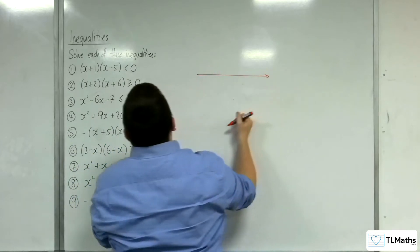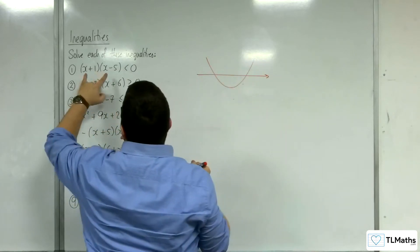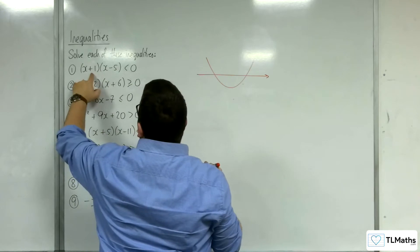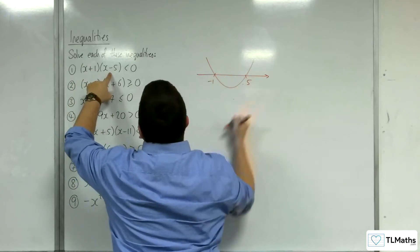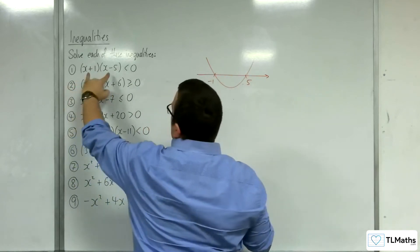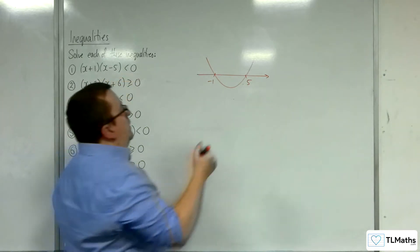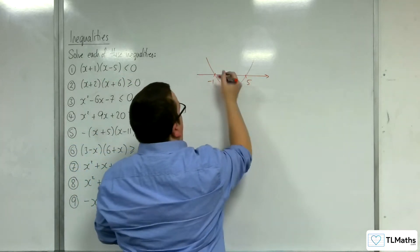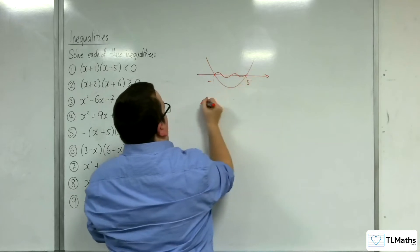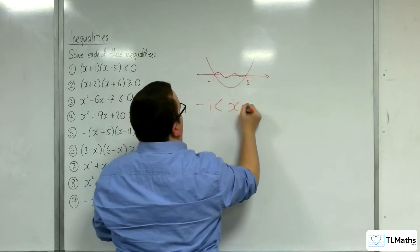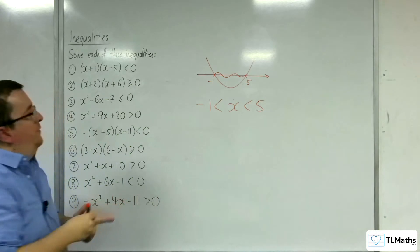I'm just going to draw a sketch. The parabola is going through −1 and 5. Where is the parabola below the x-axis? It's below it in this region, so the answer to the inequality is x is greater than −1 but less than 5.